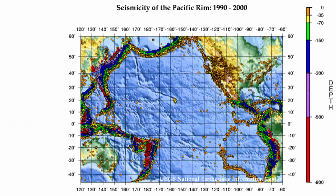Let's look more closely at these earthquakes and color code them by depth. The shallowest earthquakes dominate at divergent plate boundaries and transform plate boundaries. At some plate boundaries, such as this one off of South America, we get three different depth earthquakes in parallel stripes. Why?